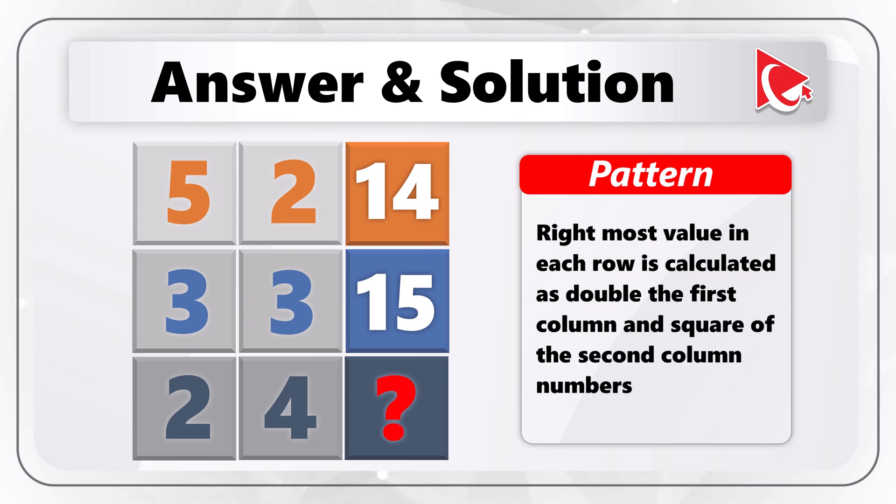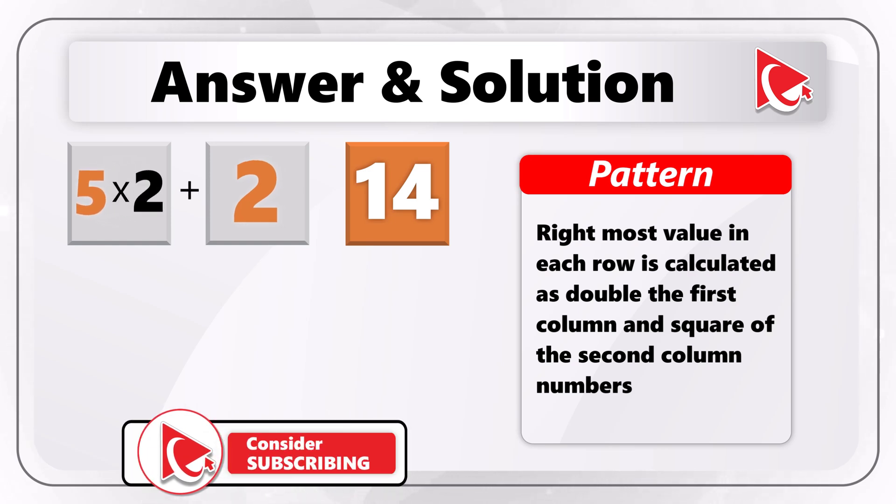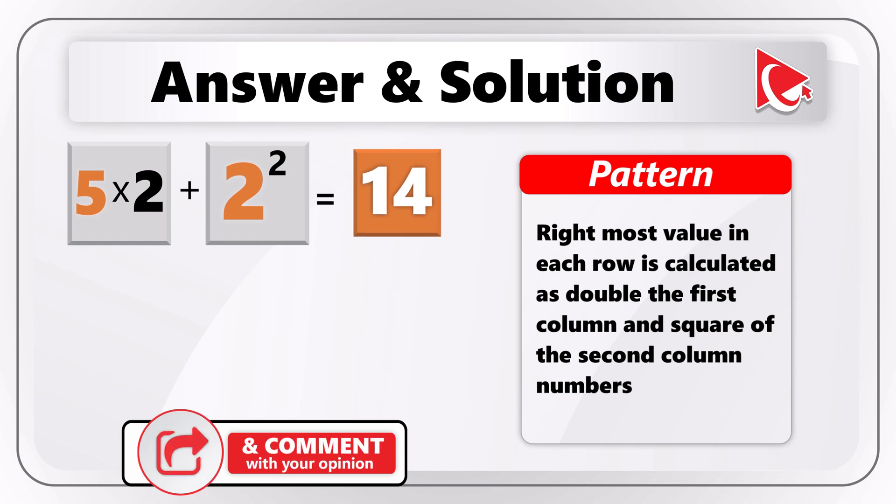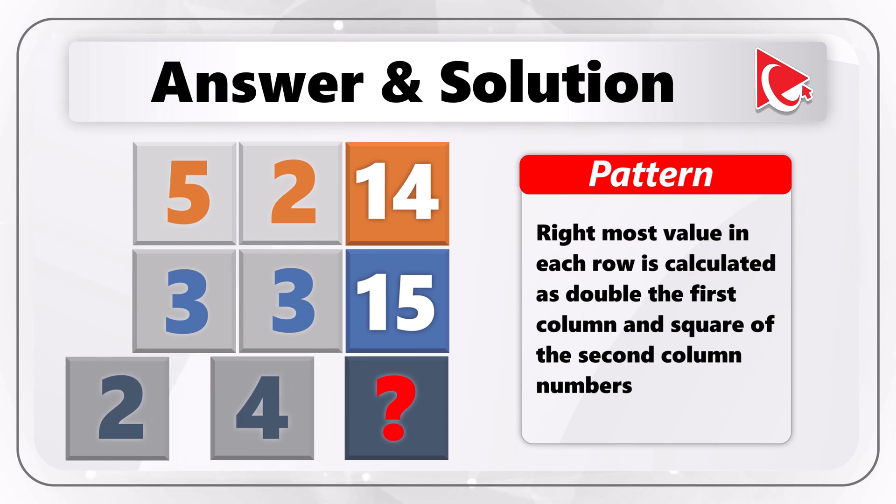I think the pattern here is that the rightmost value in each row is calculated as double of the first column's value plus square of the second column numbers. Let's look at the example. For example, for the first row, the calculations might be 5 multiplied by 2 plus 2 squared, which would equal 10 plus 4, and end result of this would be 14. For the second row, the calculations will be 3 multiplied by 2 plus 3 squared, which would equal 6 plus 9, and end result of this would be 15. So for the missing value, the calculations will be 2 multiplied by 2 plus 4 squared, which would equal 4 plus 16, and the end result of this would be 20.